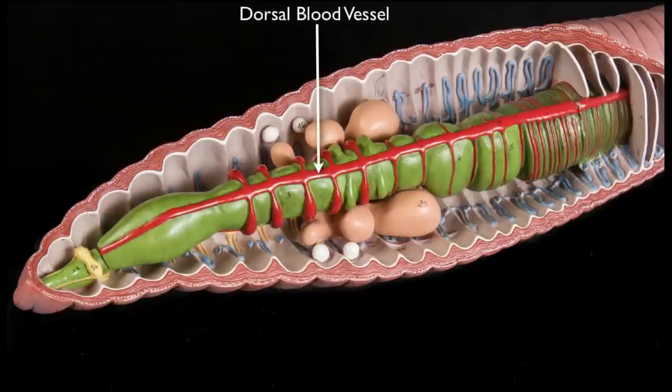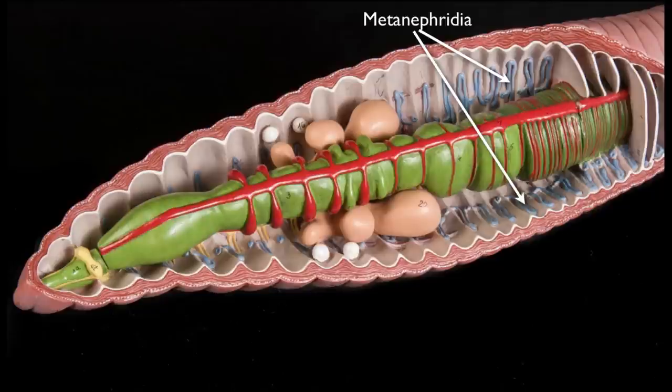Next we have the dorsal blood vessel, sitting atop the digestive tube. This vessel carries blood towards the heart, as we will discuss shortly. The blue tube-like structures on the inside wall of the model represent metanephridia — your lab manual refers to these simply as nephridia. These carry out excretory functions in the earthworm. There are two metanephridia per body segment, with a few exceptions.